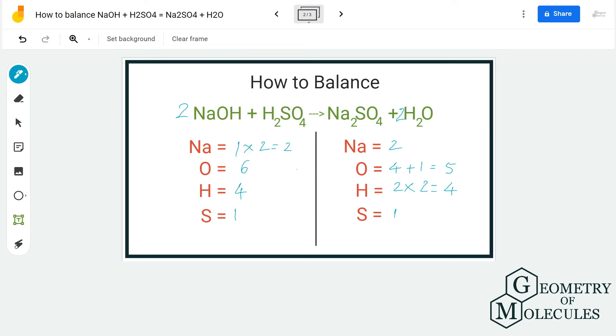So now we have 4 plus 2 here, as there are 2 oxygen atoms, so in total we have 6. And sulfur atom will be 1 because there is no change over here. So now if you check, the reactant side and the product side match.